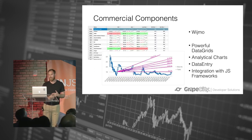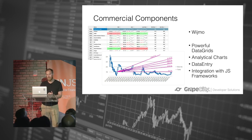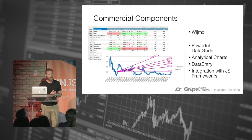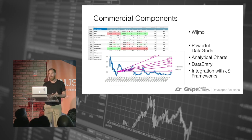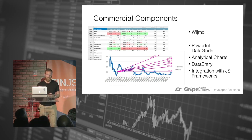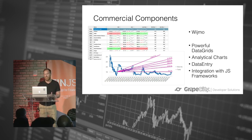And then commercial components — there are a lot of commercial component vendors out there solving very difficult problems: things like spreadsheets, data grids, and analytical charts that you probably won't find in open source. You come to a point of decision where you need to either build it yourself, gain that expertise, and maintain it — or you go out and buy something.